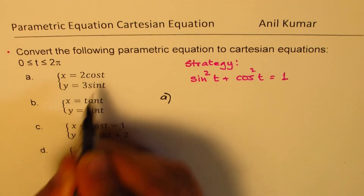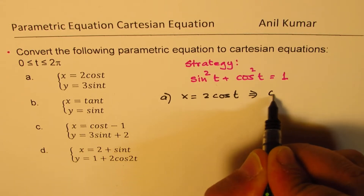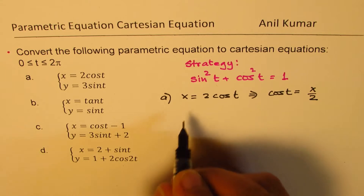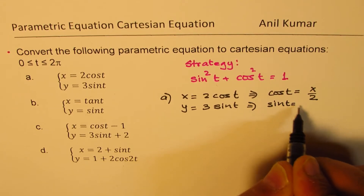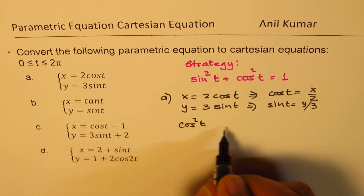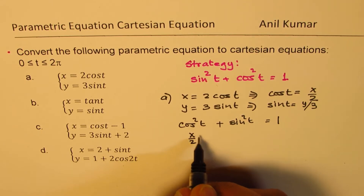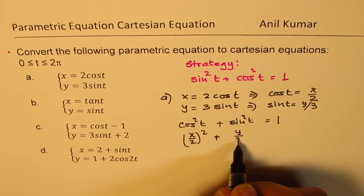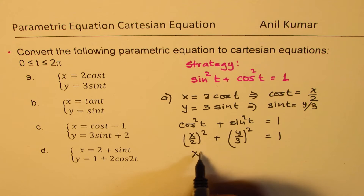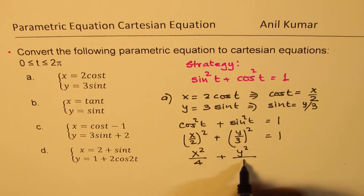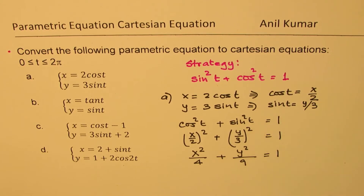Let's begin with part A, which is straightforward. We have x = 2cos(t), so that gives us cos(t) = x/2. And we have y = 3sin(t), so sin(t) = y/3. Now, cos²t + sin²t = 1, so replacing cos t with x/2 and sin t with y/3, we get x²/4 + y²/9 = 1. This is our Cartesian equation with no parameters.